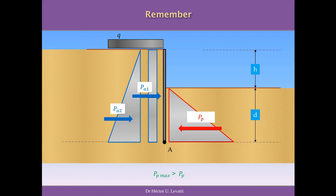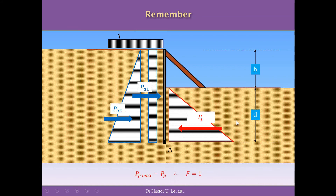The maximum passive pressure must be greater than the passive pressure in equilibrium, which gives a safety factor greater than one, indicating the structure is stable and safe. The safety factor is defined as the ratio of the maximum passive pressure to the passive pressure in equilibrium. In geotechnical engineering, a safety factor between two and five — or even more — is typically expected. When the safety factor equals one, the stability of the wall is compromised and reinforcement is needed immediately. If the safety factor falls below one, failure is imminent and the area must be evacuated.